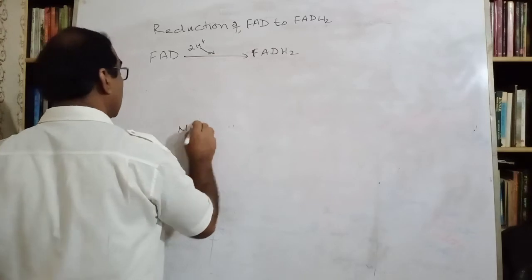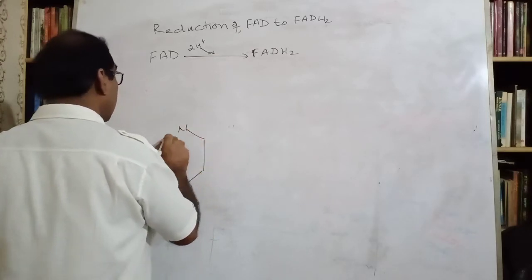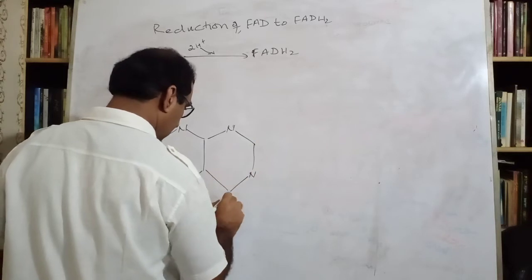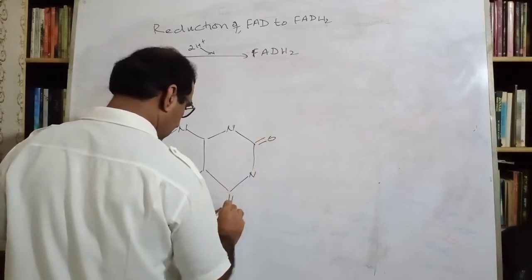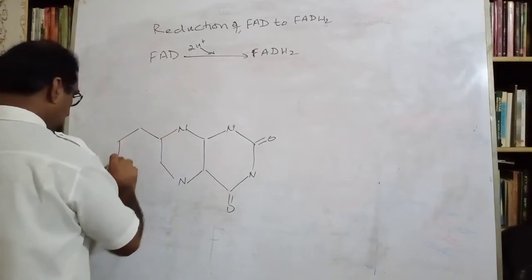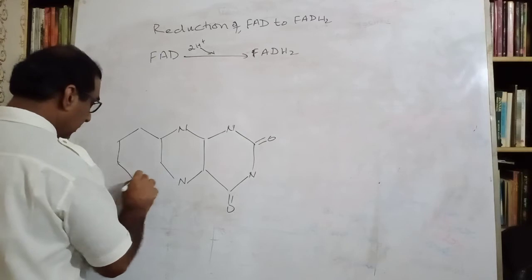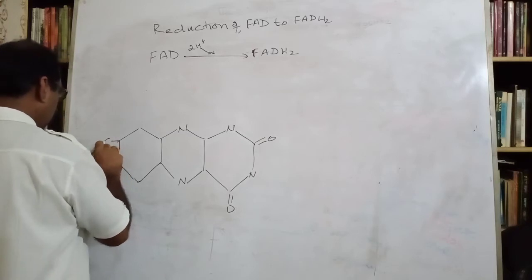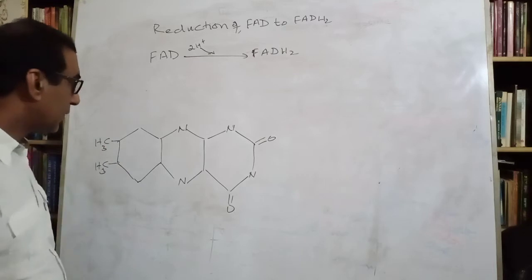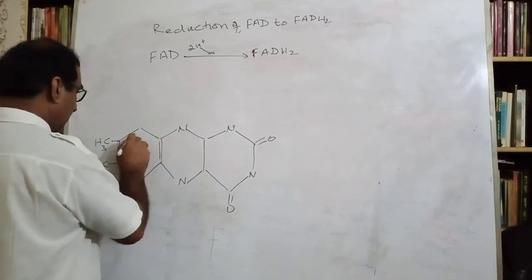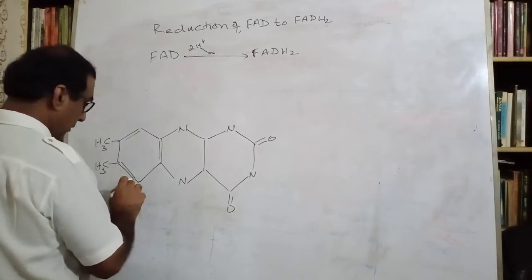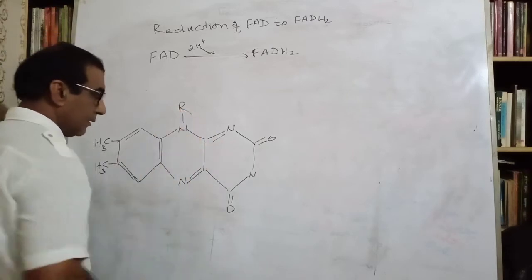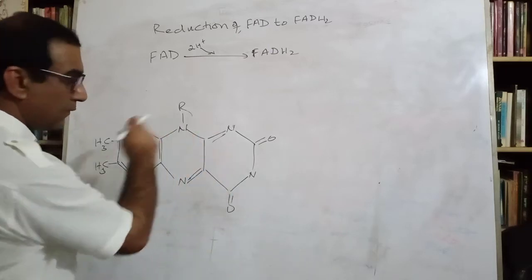Here is the structure of Flavin molecule, and by understanding it, you would be able to see where these two hydrogens are incorporated into what? This is the structure of Flavin molecule.